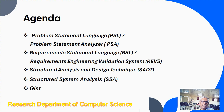There are a number of languages available in software engineering. First is PSL — Problem Statement Language — with its corresponding processor PSA, the Problem Statement Analyzer. Second is RSL, Requirement Statement Language, with its corresponding REVS, Requirement Engineering Validation System. Third is SADT, Structured Analysis and Design Technique. Fourth is Structured Analysis (SSA). Each of these languages has its own characteristics — some operate manually, some automatically, and some are graphical or textual in nature.